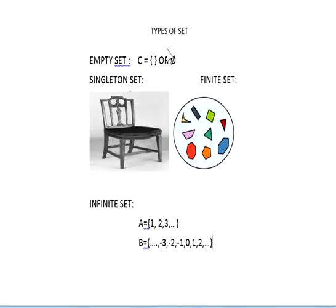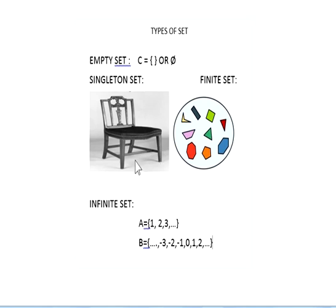Next, types of sets. There are four types of sets. The first one is the empty set. An empty set means a set that does not contain any element — that is called an empty set. It is represented by only curly braces or by the empty set symbol. The next one is the singleton set. A singleton set means a set that contains exactly only one element. Since single means one, the set contains only one element, so it is called a singleton set.